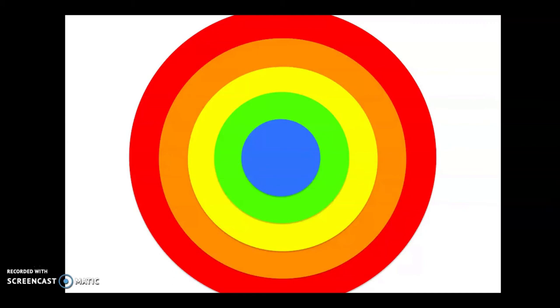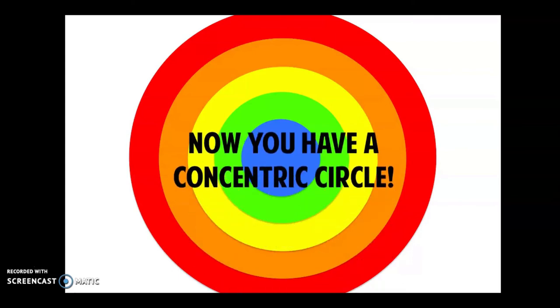If I look at these circles, they all have the same middle point where the blue circle is located, but they get bigger as they go out. So now we have a concentric circle.